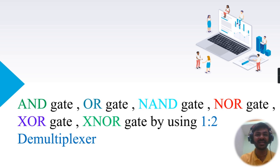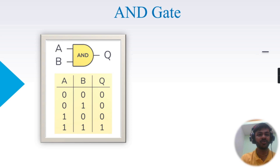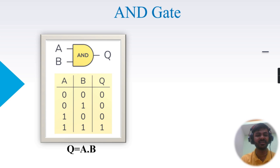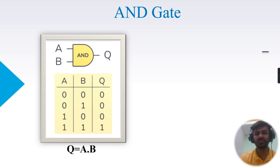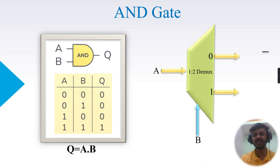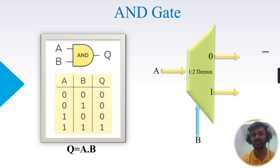Let's start with the first gate, the AND gate. On screen you can see the truth table of AND gate: if both inputs are high, output will be high. The logical expression is Q equals A AND B. To implement this logic gate, we'll draw a 1-to-2 demux. In the AND gate we have two inputs A and B and output Q. I have selected B as the select line and A as the input.